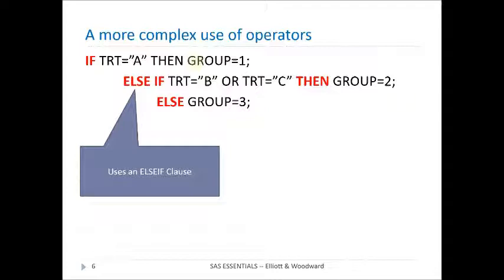A more complex example uses the if-else or else-if structure. So if treatment equal A, then I'm going to set group equal to 1. Else, if treatment is B or C, I'm going to set group equal to 2. And finally, all the rest of them are else, group equal to 3.